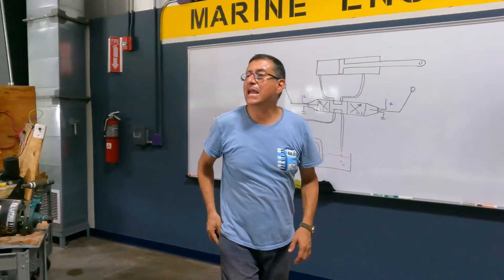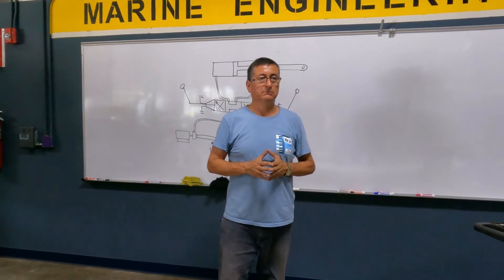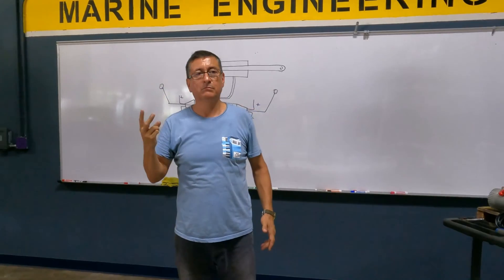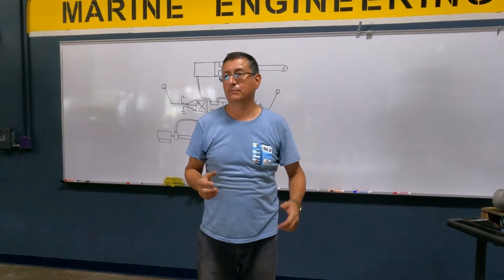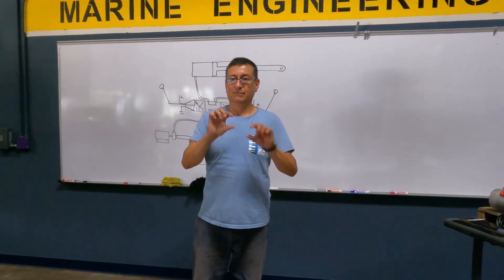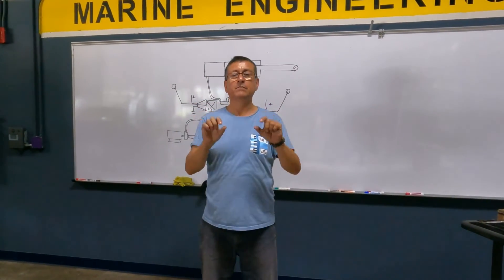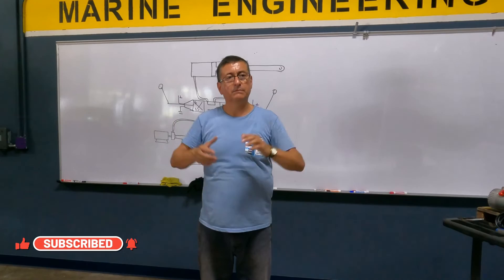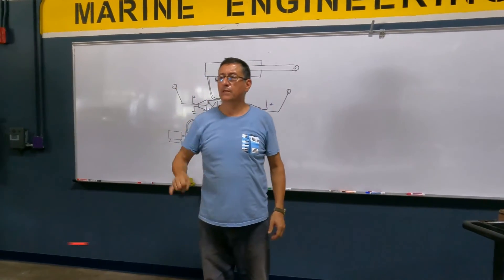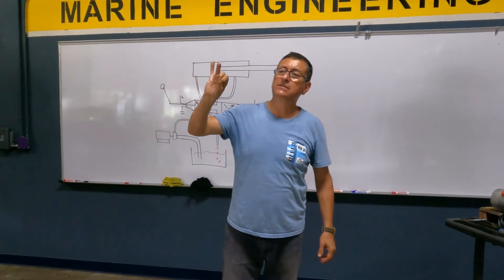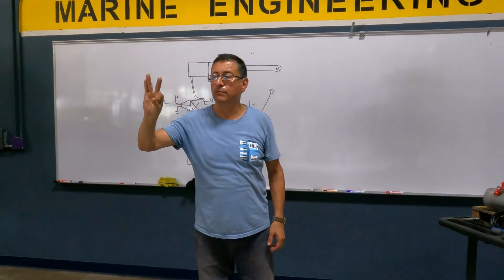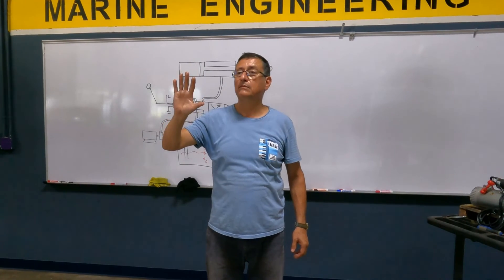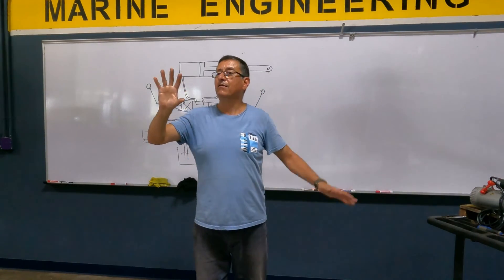In other words, any hydraulic system requires number one, fluid. Number two, a container, reservoir. Number three, the solenoid valve. And the pump with motor, the power source. And of course, the lines. Five elements. Once again, fluid, lines, pump and motor, reservoir, and sequential valve or solenoid valve, or body of valve. That's it, five elements.